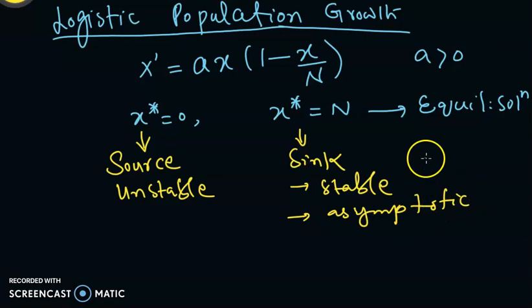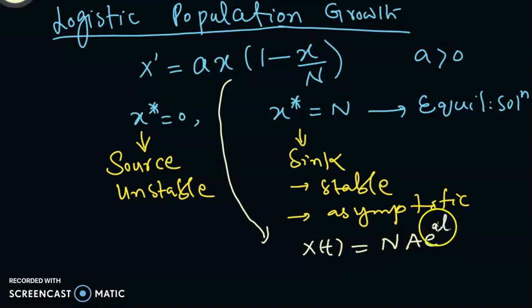Why asymptotic? Because if we solve this logistic regression model, the solution is given by x(t) = NAe^(at)/(1 + Ae^(at)), where A is some constant. Since a > 0, you can simplify it to write this in another form.